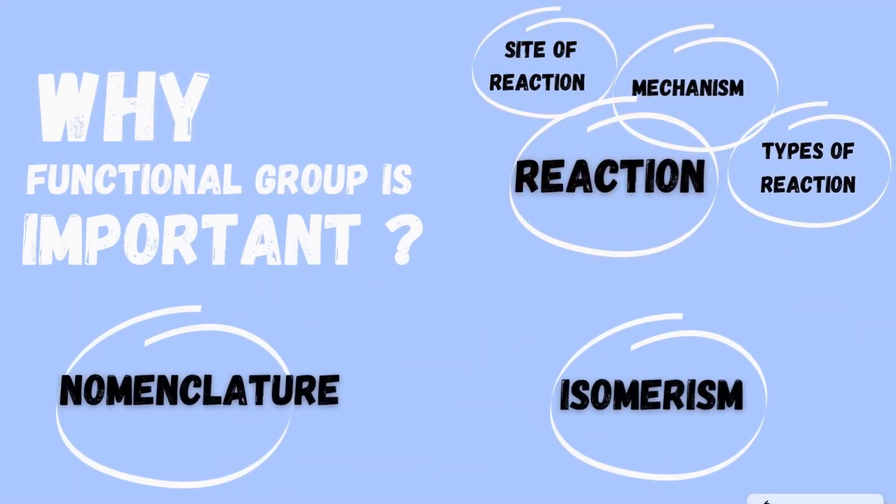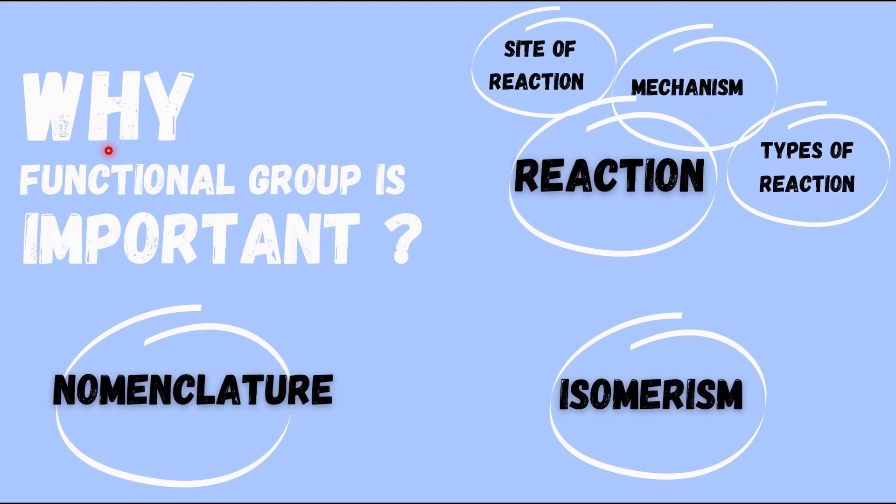I'm going to explain first why functional groups are very important. They're actually the heart of organic chemistry, where students will learn about nomenclature, isomerism, and the reactions of organic chemistry. If students manage to memorize and understand the structure of functional groups and homologous series, they will be able to master organic chemistry. This is the key.